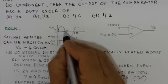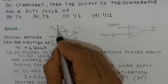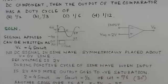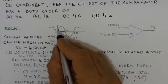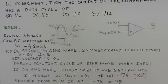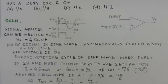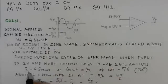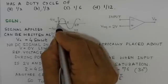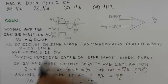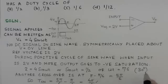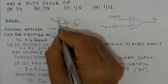We need to determine the on time of the output pulse. At 2 volts, we have 2 = 4 sin ωt, so sin ωt = 1/2, which gives ωt = π/6 or 30 degrees. This point is at π/6.